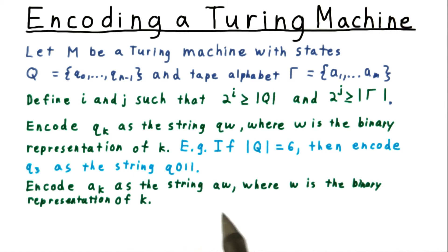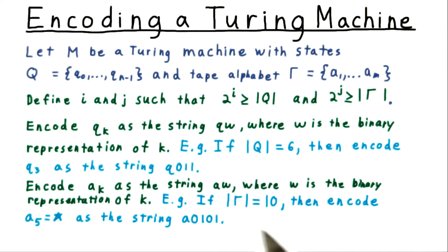We encode symbols much in the same way as we encoded states. We'll use a followed by w, where w is the binary representation of this k to indicate the kth symbol. For example, if there are 10 different symbols, then we need 4 bits to represent them all. And we might encode a5, which could be any symbol, maybe it's a star.